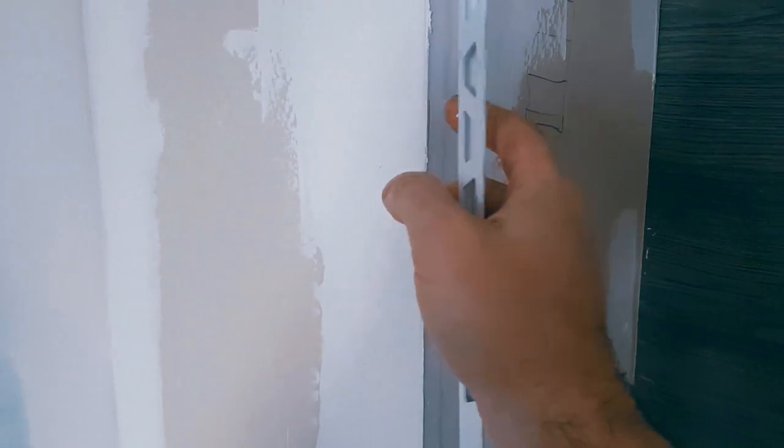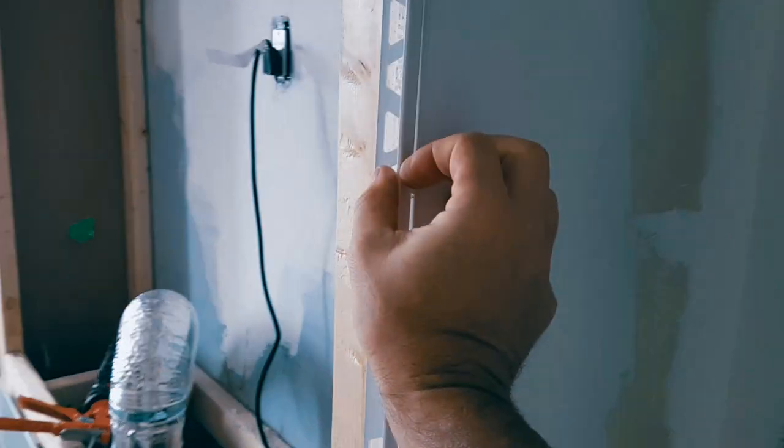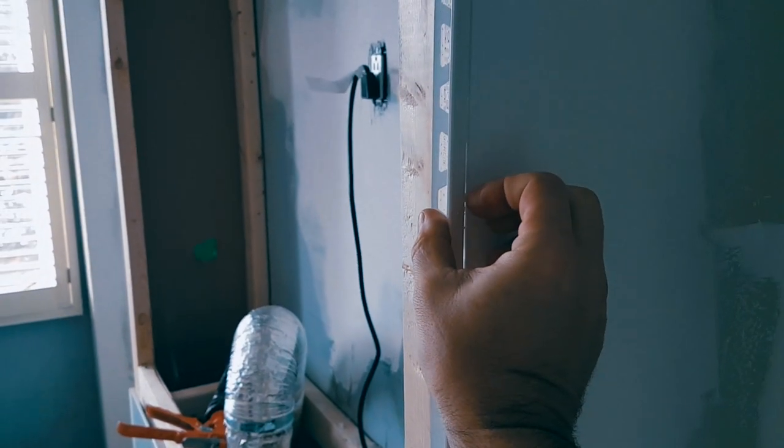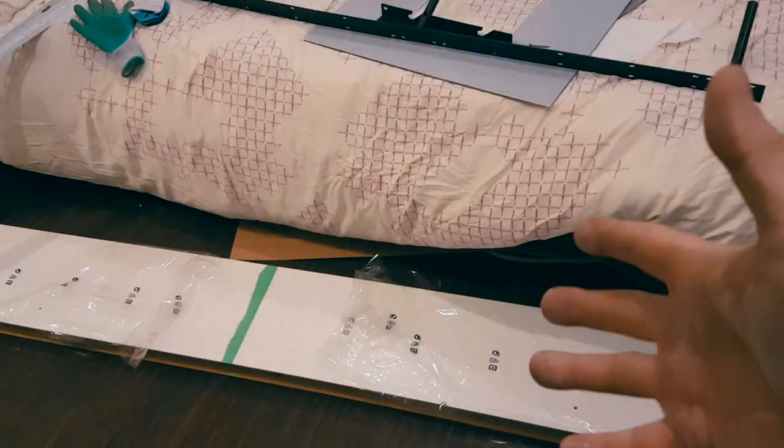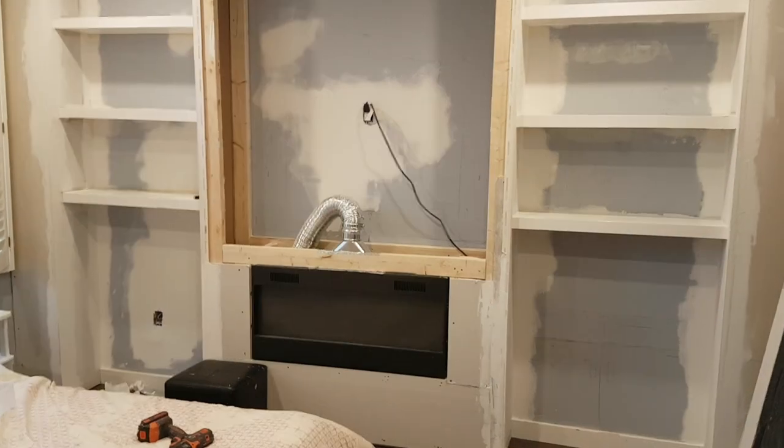And then you can caulk the whole thing and then you place the other one. You do one on each of these sides as well. So it's going to look pretty good when it's done. We're going to be custom creating all the shelving in here.